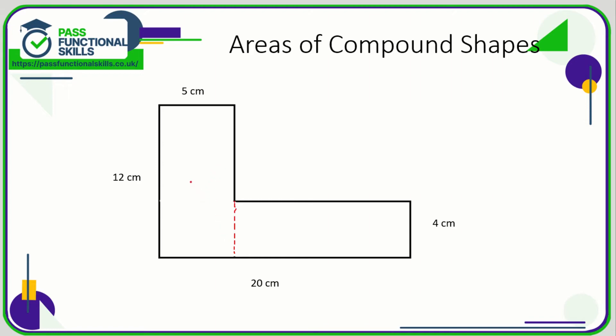So here I'm going to turn it into a rectangle A and a rectangle B. Sometimes you might be turning the shape into a rectangle and a triangle, but this is nice and easy: a rectangle and a rectangle.